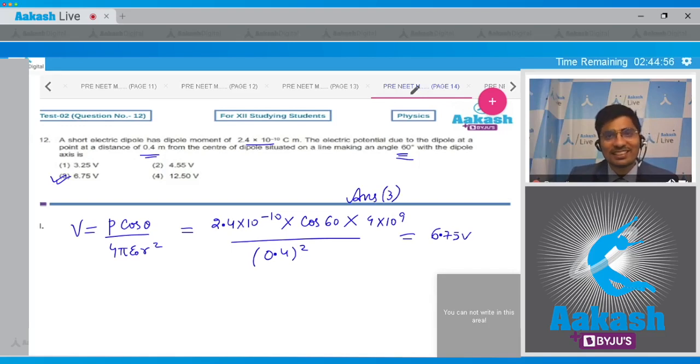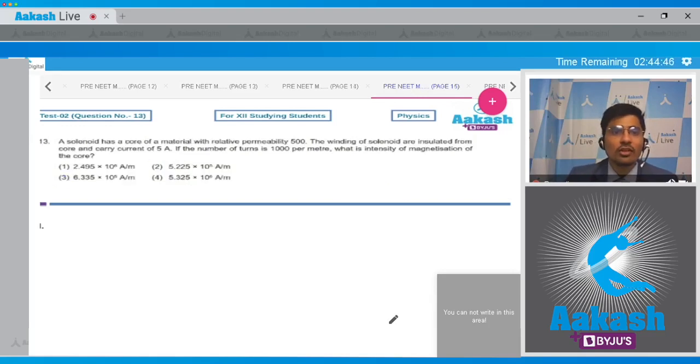Now let us move to question number 13. Question 13 says a solenoid has a core of material with relative permeability 500. The windings of solenoid are insulated from the core and carry a current of 5 amperes. If the number of turns is 1000 per meter, then what is the intensity of magnetization of the core? The four options are in front of you.